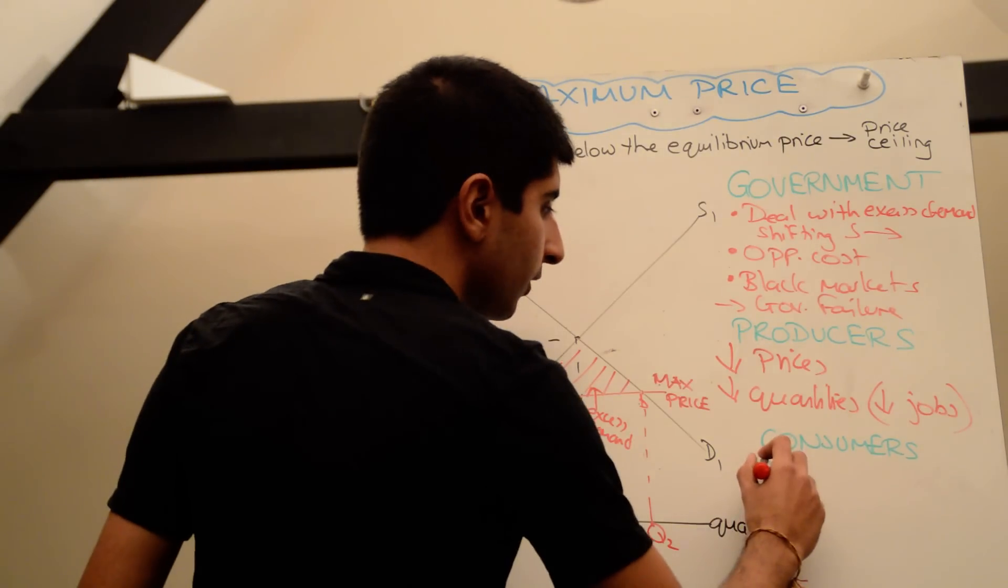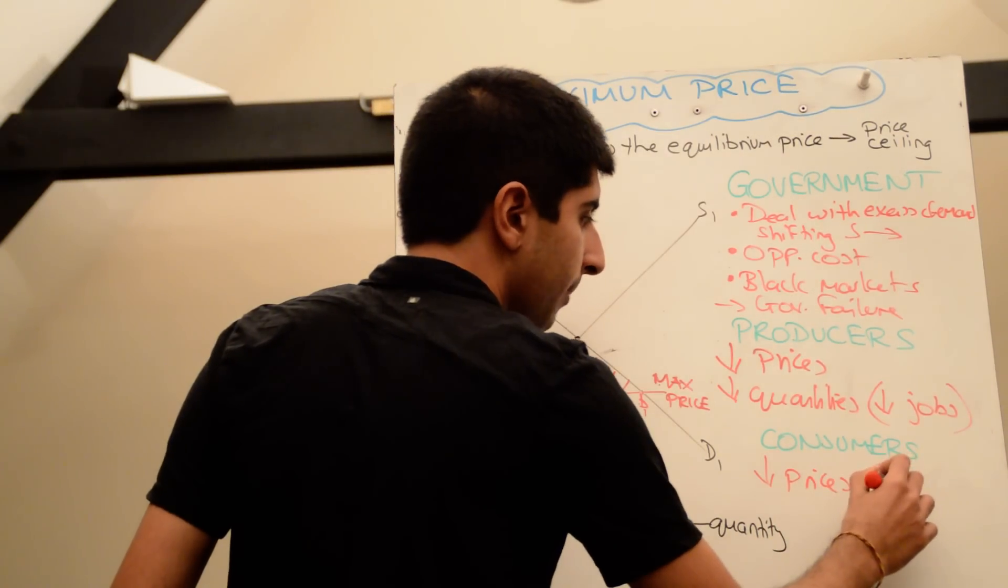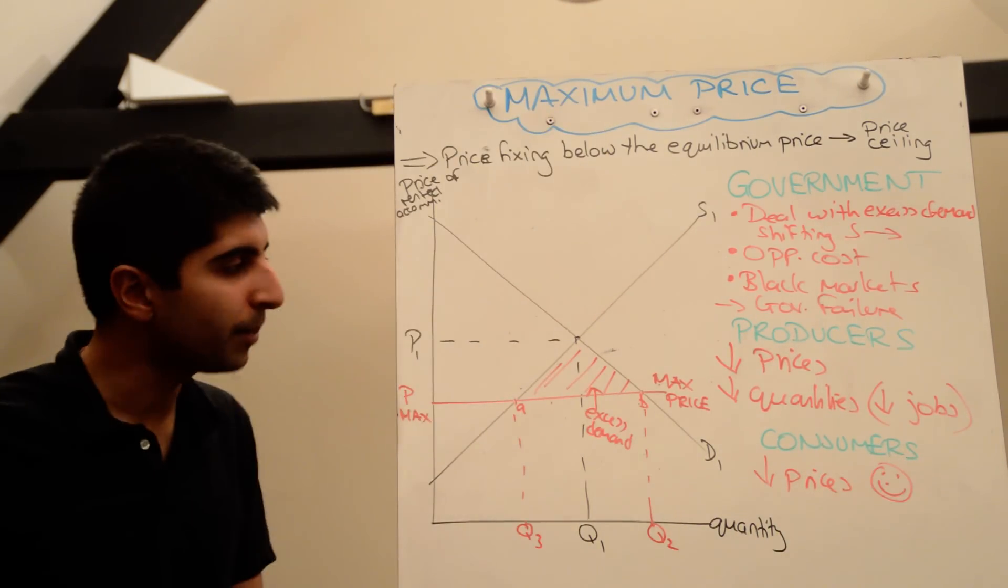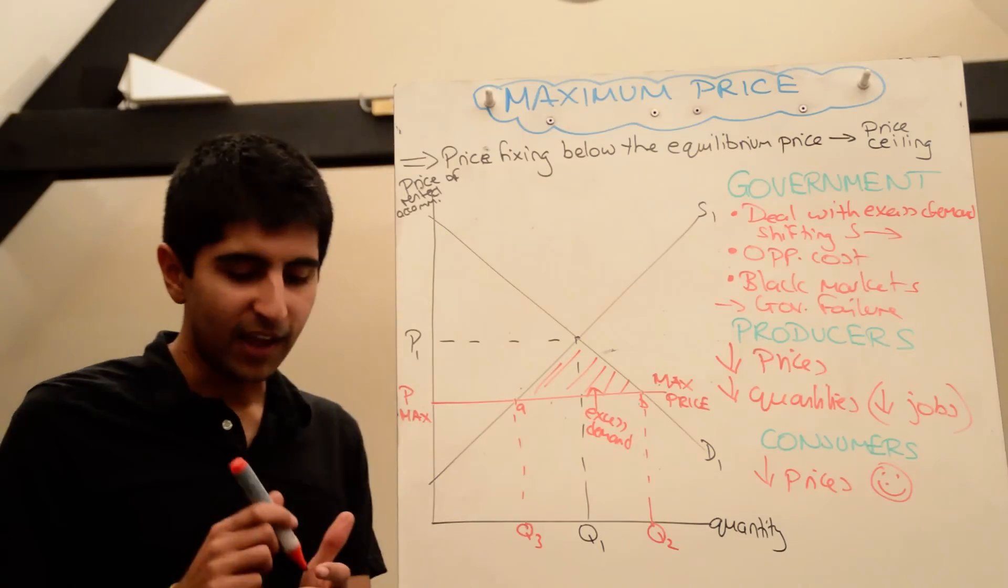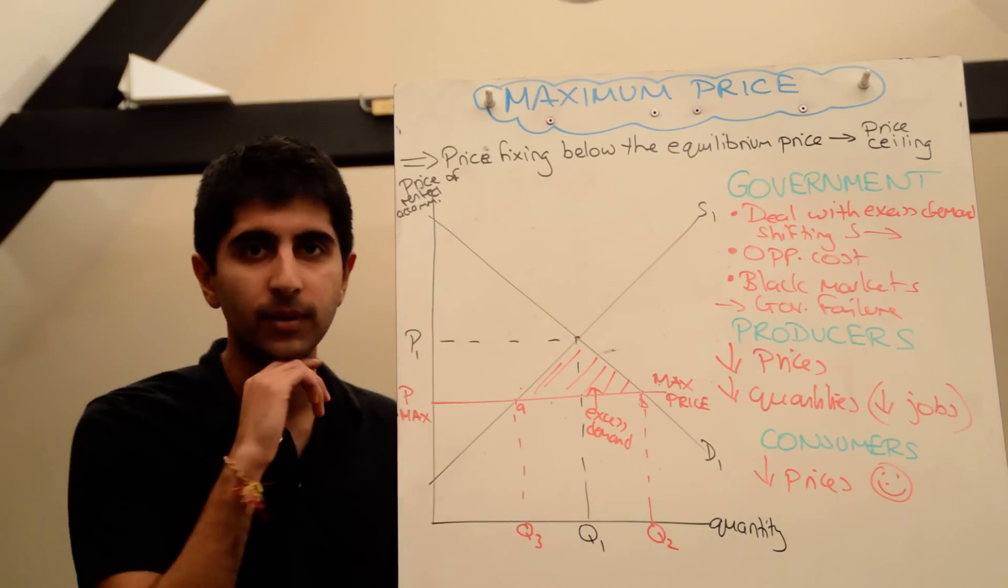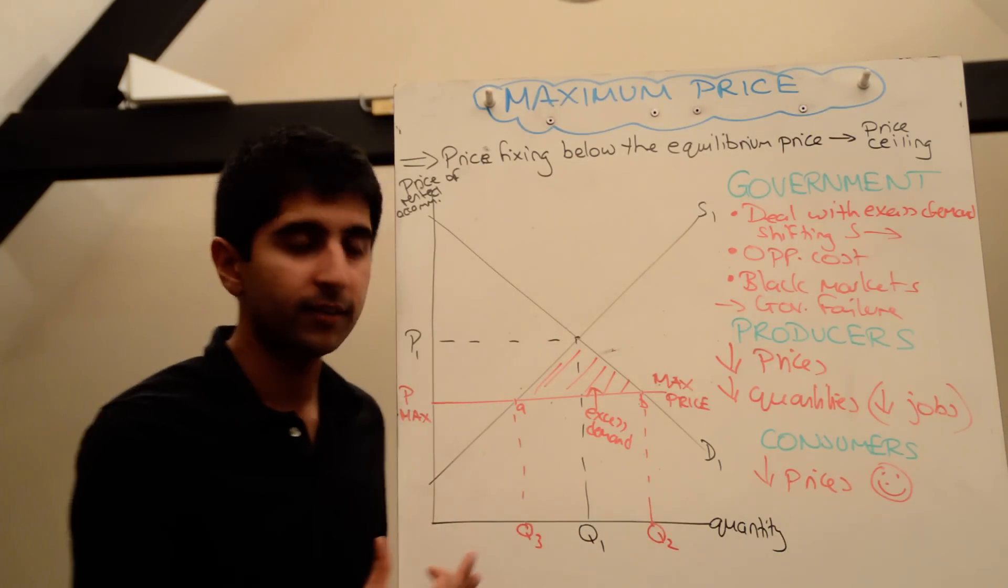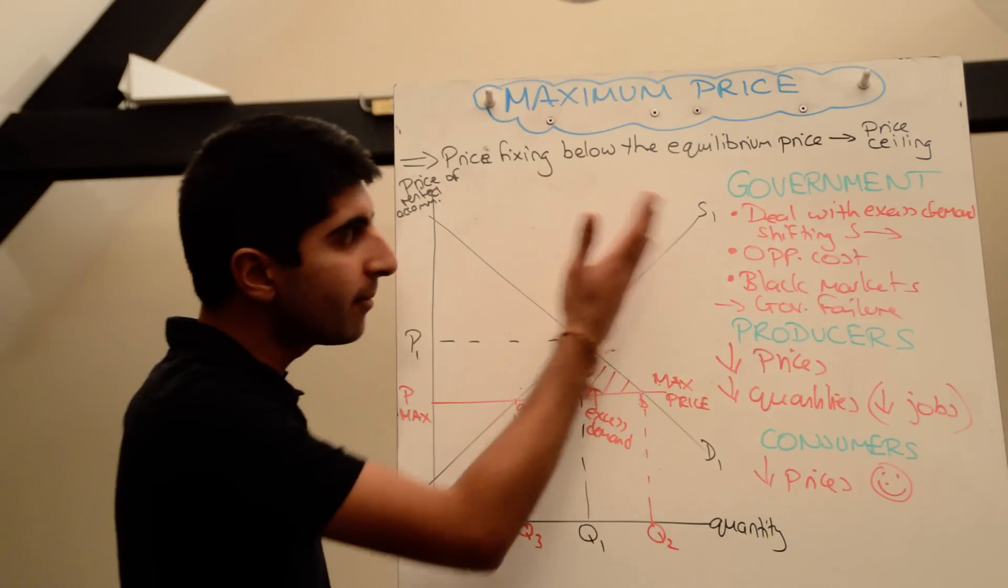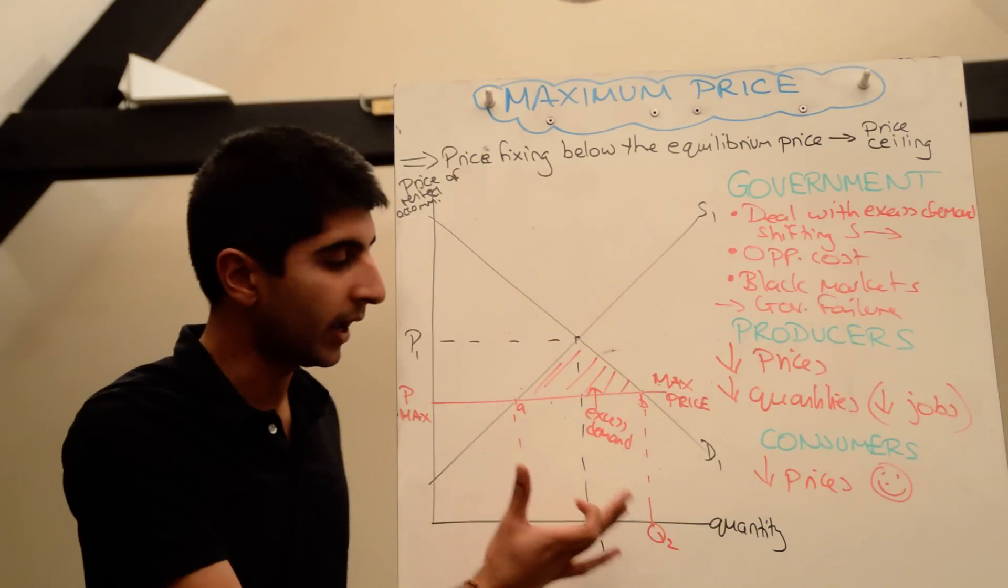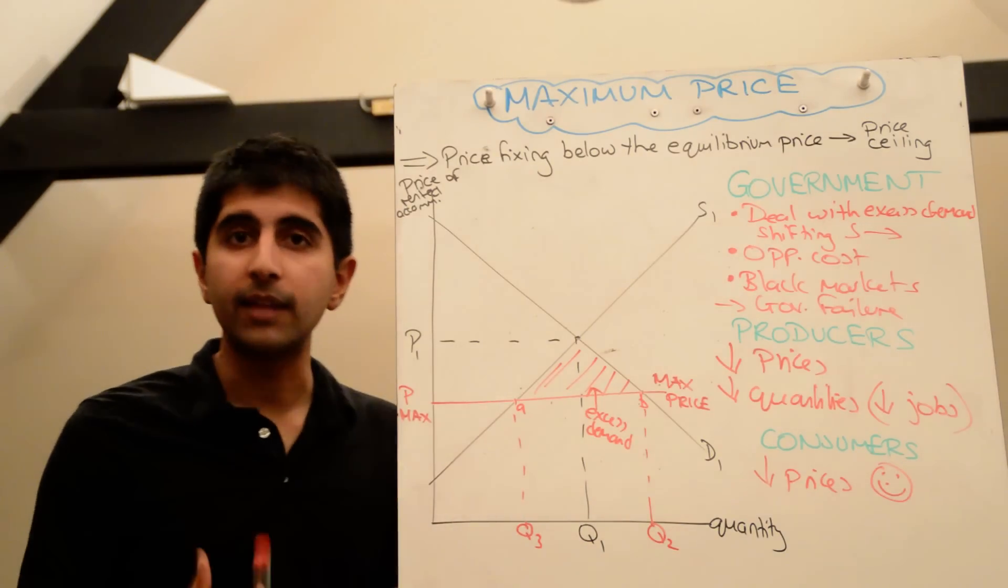Consumers like this. So consumers like the fact that there are lower prices. So consumers are happy about that, the fact that there are lower prices. But they're not going to be so happy if they can't actually buy whatever it is at this lower price because there isn't enough available. So the excess demand problem may well negate some of the benefits of lower prices. However, once again, if the government is successful in increasing supply, they may benefit from lower prices and still consume at a given quantity.